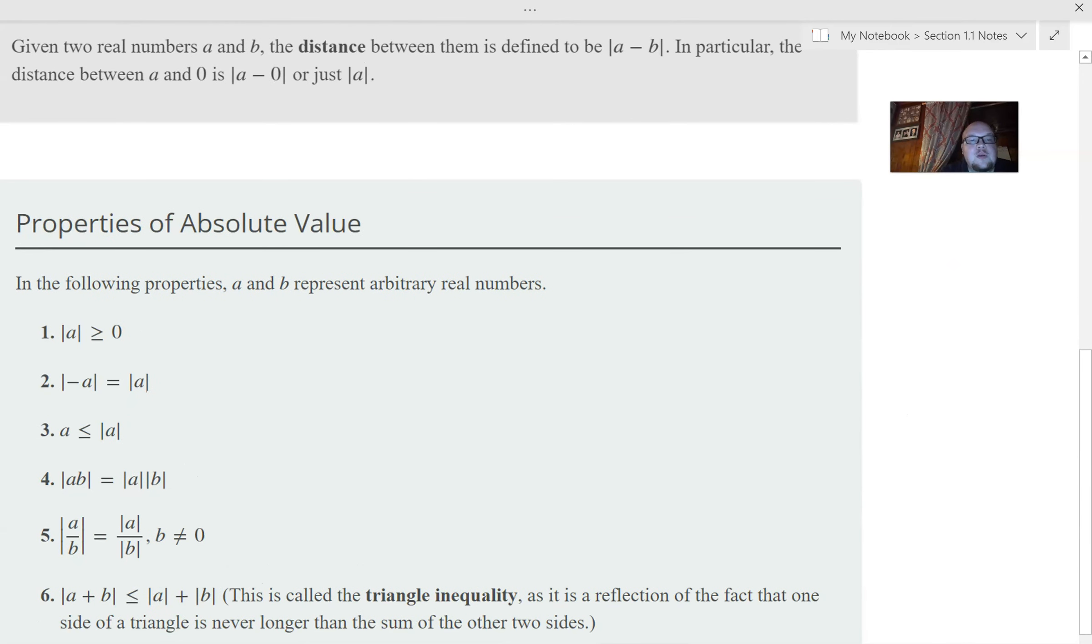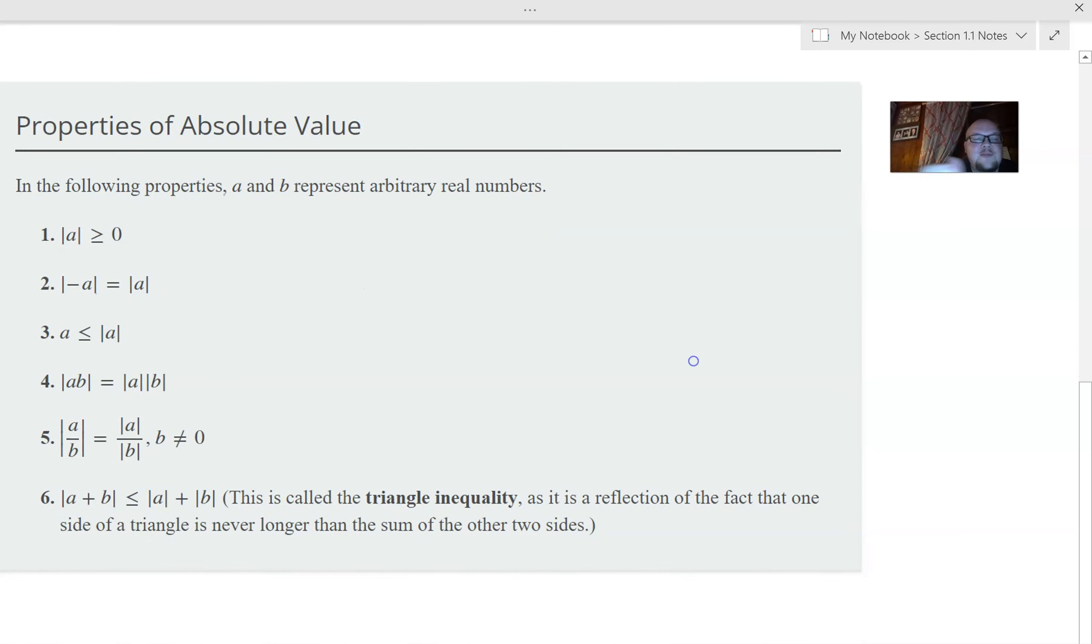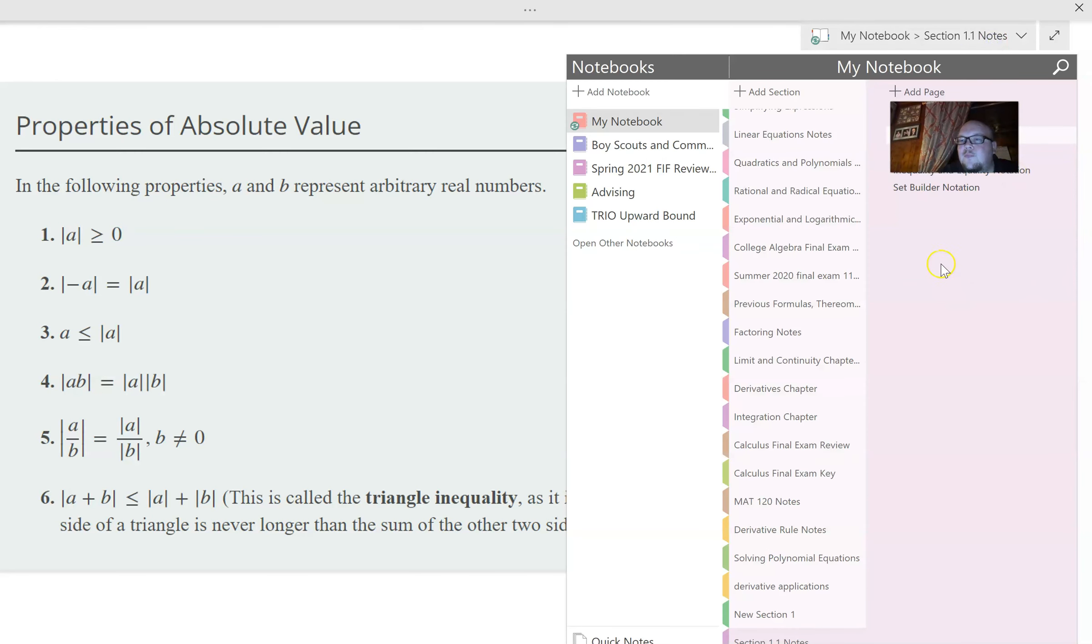Properties of absolute, as I said, absolute value is always greater than or equal to zero. When we're multiplying inside, it's the same as multiplying the two pieces separately. Same idea with division as long as b is not zero. And then in mathematics, we use the triangle identity many, many, many times. It's saying if you're adding inside of your absolute, it is less than or equal to the absolute value of a plus the absolute value of b.